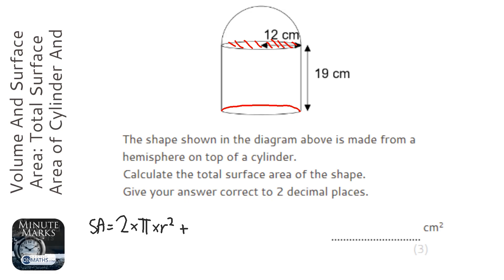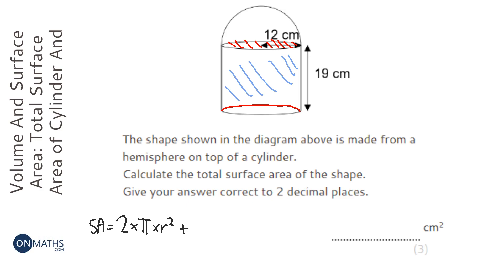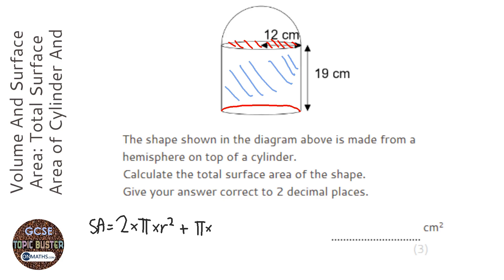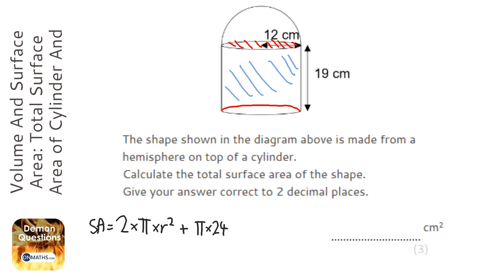Then we add the curved surface area of the cylinder. As discussed in a previous video — and there are videos on the website if you're unsure — the curved surface area is the circumference of the circle times the height. The circumference is π times the diameter, which is 2 × 12 = 24, and we multiply that by the height of 19. The radius is 12, so we'll use 12 squared where needed.